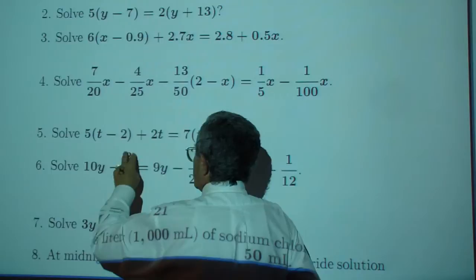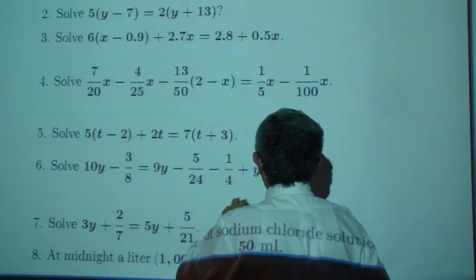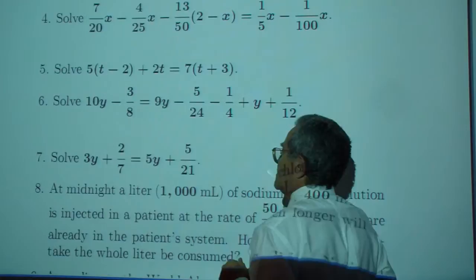Exercise 6. 10y - 3/8 = 9y - 5/24 - 1/4 + y + 1/12.